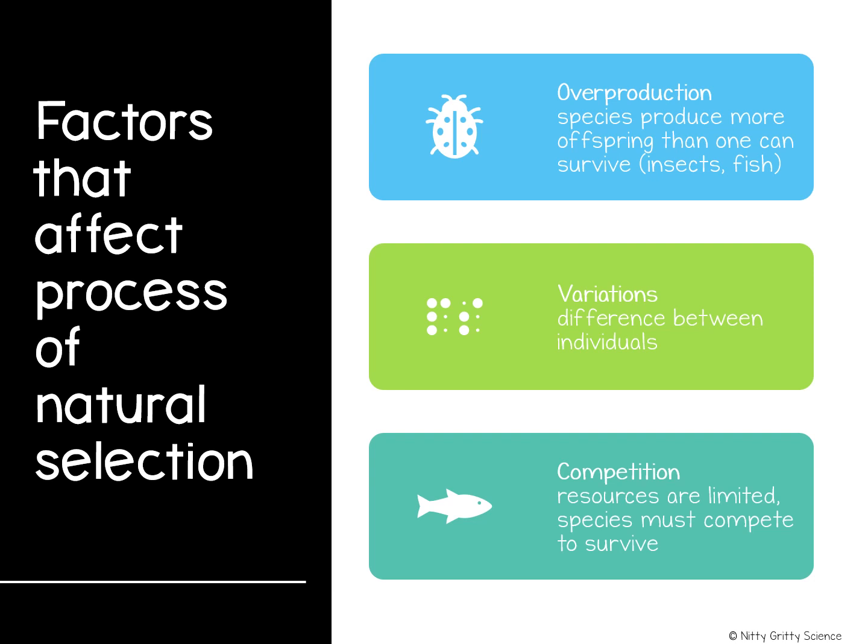Darwin also knew that individual members of a species exhibit slight differences, or variations. A variation is a slight difference in an inherited trait of an individual member of a species. Variations arise naturally in a population and are caused by random mutations or changes in genes. Mutations can lead to changes in phenotype — the observable traits and characteristics of an organism. If a mutation or variation leads to better survival, that phenotype will most likely be passed on to future generations. Without variation, all members of a species would have the same traits and natural selection would not occur. Darwin was unable to explain what caused variations or how they were passed on, but we now know it is mutations and the shuffling of alleles during meiosis that cause these variations.